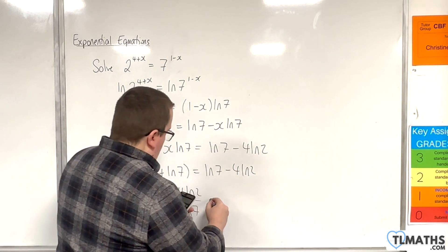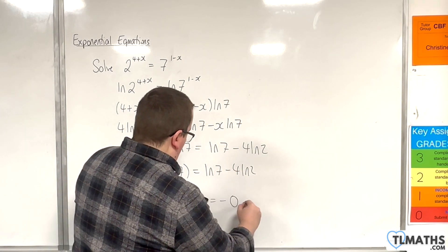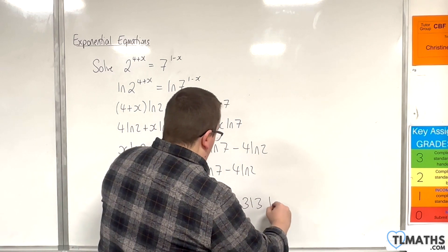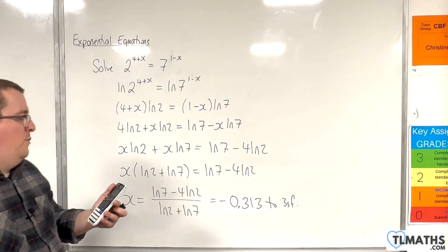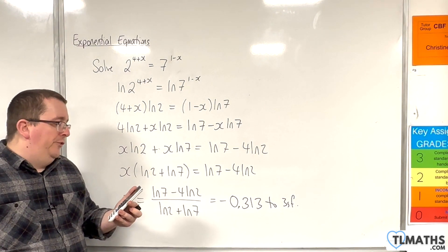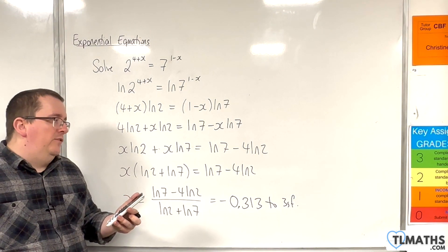And we get minus 0.313 to 3 significant figures. So my calculator is saying minus 0.3132476752.